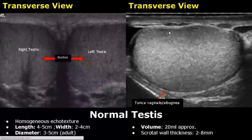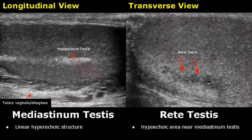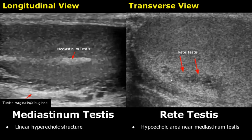In this transverse view we can see both testes — the right testis here and the left testis here. The mediastinum testis is seen as a linear hyperechoic structure within the testis. The rete testis is not easily visualized but appears hypoechoic and is located near the mediastinum testis.